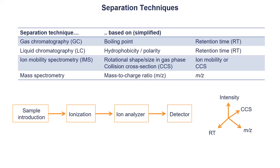Speaking about so many separation techniques: in GC you have the boiling point as an identifier, which is only possible for volatile compounds. For LC we have the polar side - we have retention time that you can compare. Ion mobility gives you the dimension of size and shape, which is very nice as an additional identification dimension. And then, of course, we have the mass spectrum itself regardless of how you separate the ions.